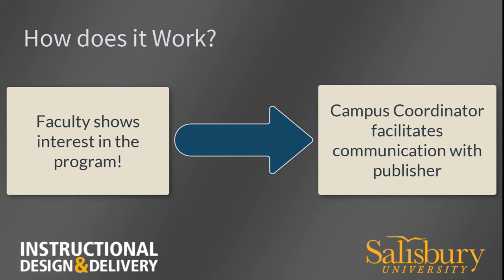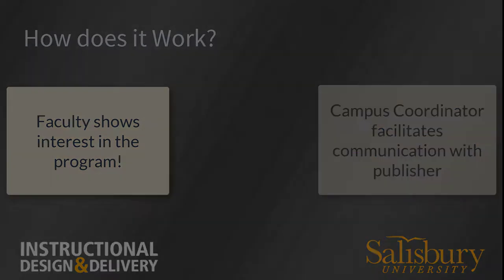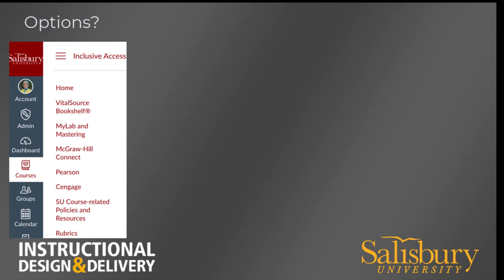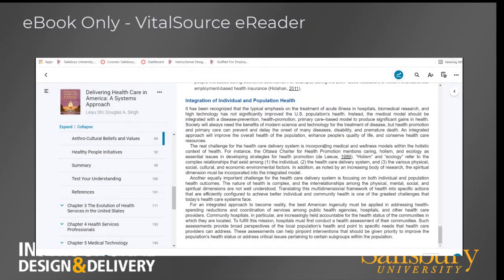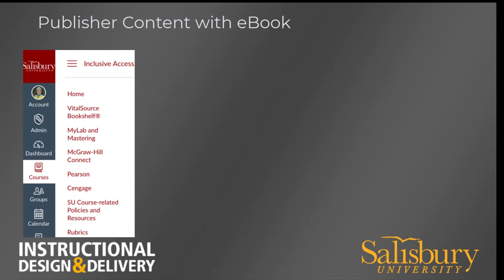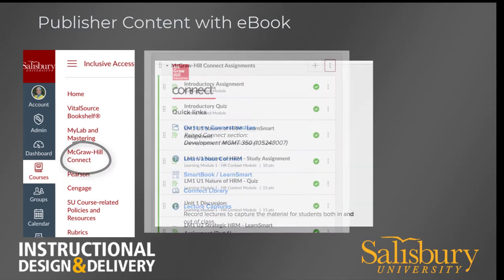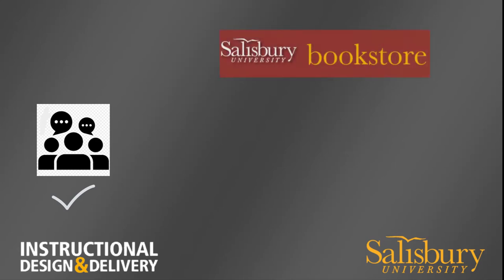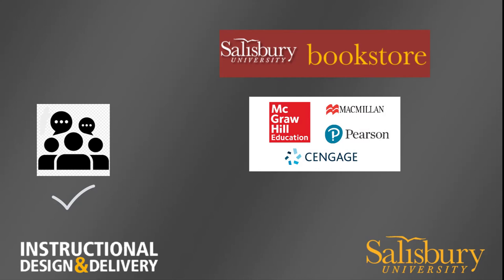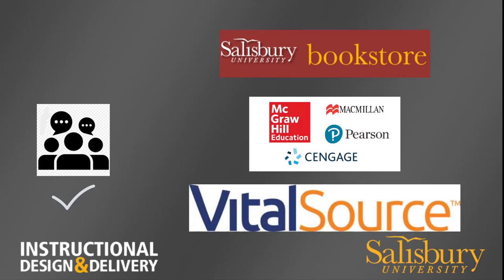The publisher rep will then provide additional information about the available content for the selected text. There are two types of course materials for faculty to choose from. Faculty can select to only utilize an electronic copy of the selected textbook, made available to students through the VitalSource eBook Reader in my classes. If available, faculty can also utilize other publisher content and activities related to the textbook title, made available through the publisher integration tool in my classes. Once faculty finalize their selection and confirm participation, the campus coordinator will work with publishers and VitalSource to secure pricing and turn on the integration tool to deliver selected content to the course in my classes.